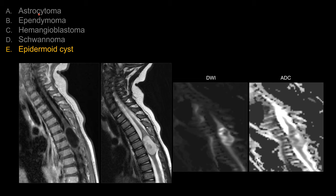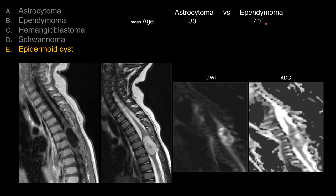What about the other choices? Astrocytoma and ependymoma are the first two you should think of when seeing an intramedullary neoplasm. Both lesions should show some enhancement, so neither is the best answer for this case. To differentiate between them on a board exam, you can use age: astrocytoma tends to occur in younger patients — kids and young adults — while ependymoma tends to occur in older patients.